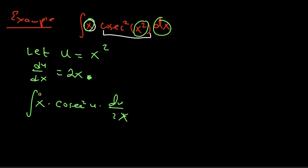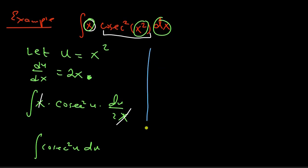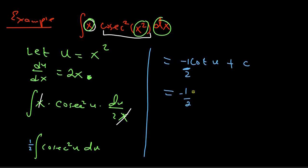The x cancels with the x, so I now have the integral of one half times cosec squared u with respect to u, which we already know. The integral of cosec squared u is negative cot u, so the result is negative one half cot u plus a constant. Substituting back for u, the answer is negative one half cot of x squared plus a constant.